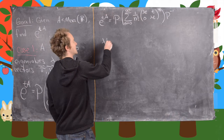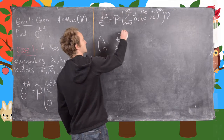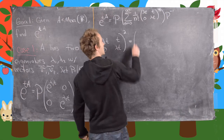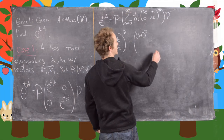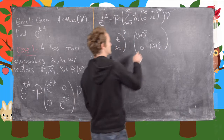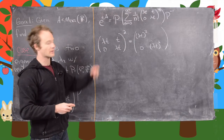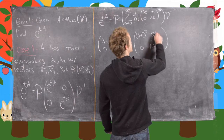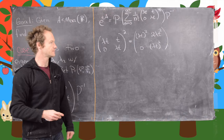Let's look at the matrix (lambda T, T, 0, lambda T) squared. We get (lambda T) squared on the diagonal, 0 in the lower left-hand spot, and in the upper right-hand spot we get 2 times lambda times T squared.